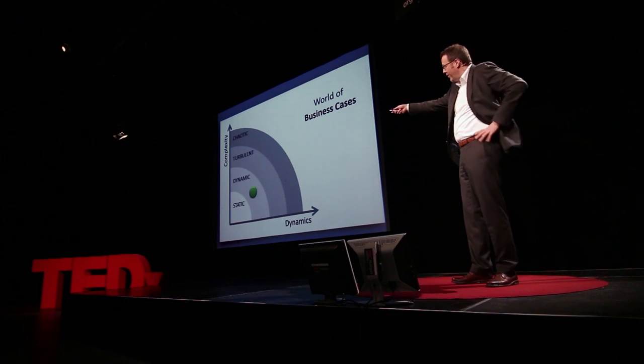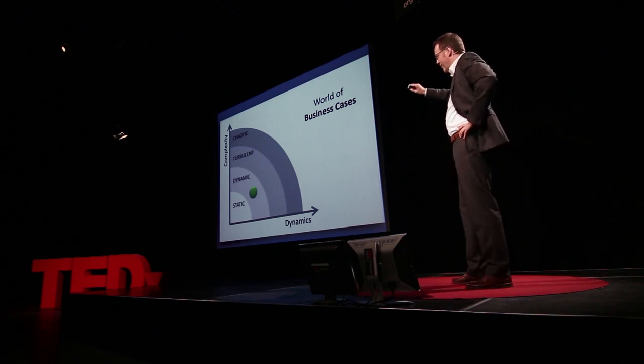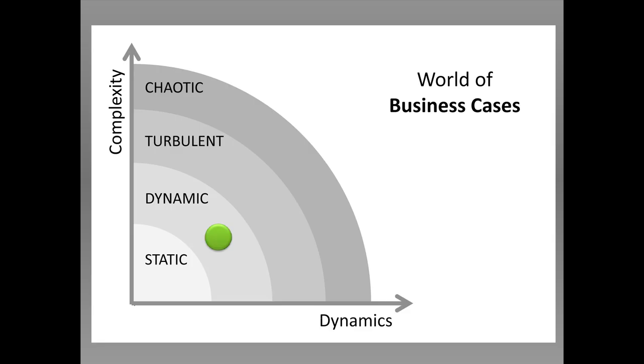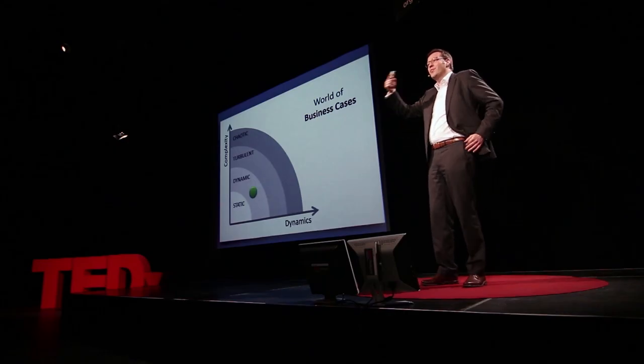If we look at this kind of organization in the real world, we see it works very well for static or slowly dynamic environments. It's a world of business cases where you think you can anticipate things, plan and then control, apply Taylorism, have stable job splits and stable interfaces.